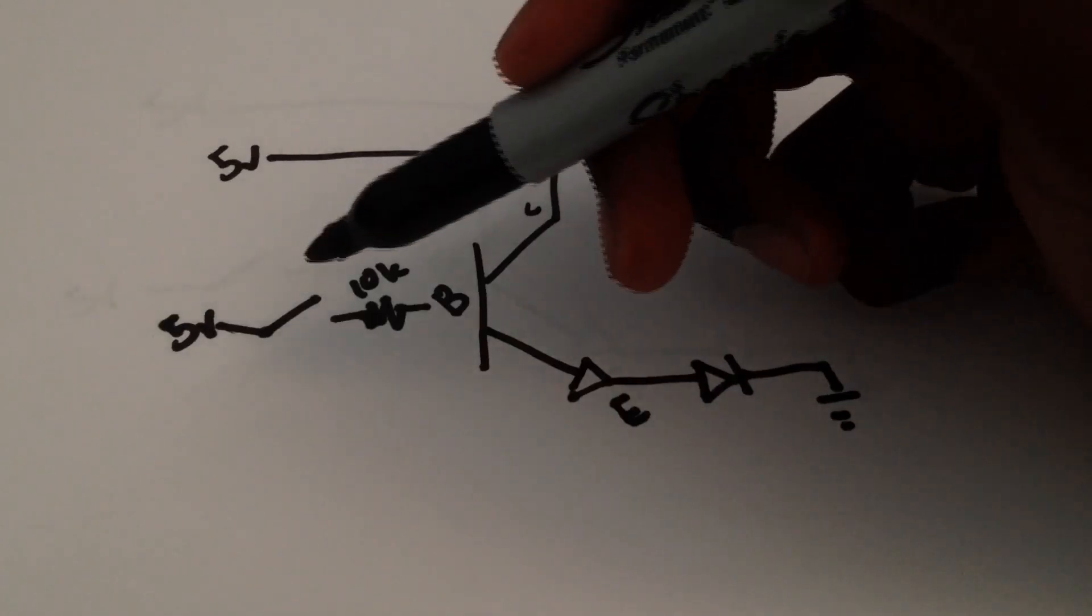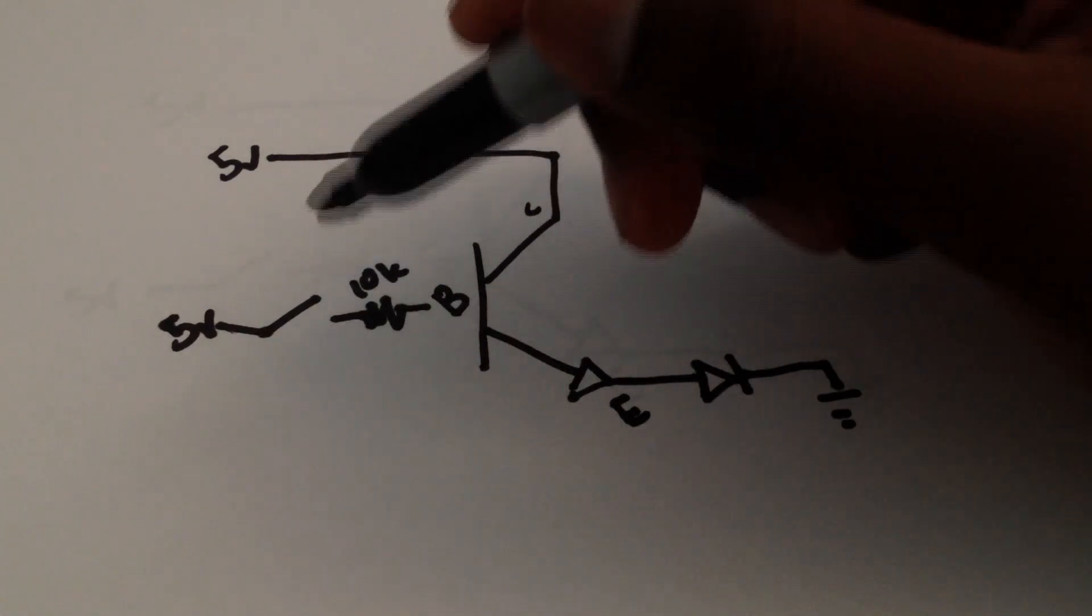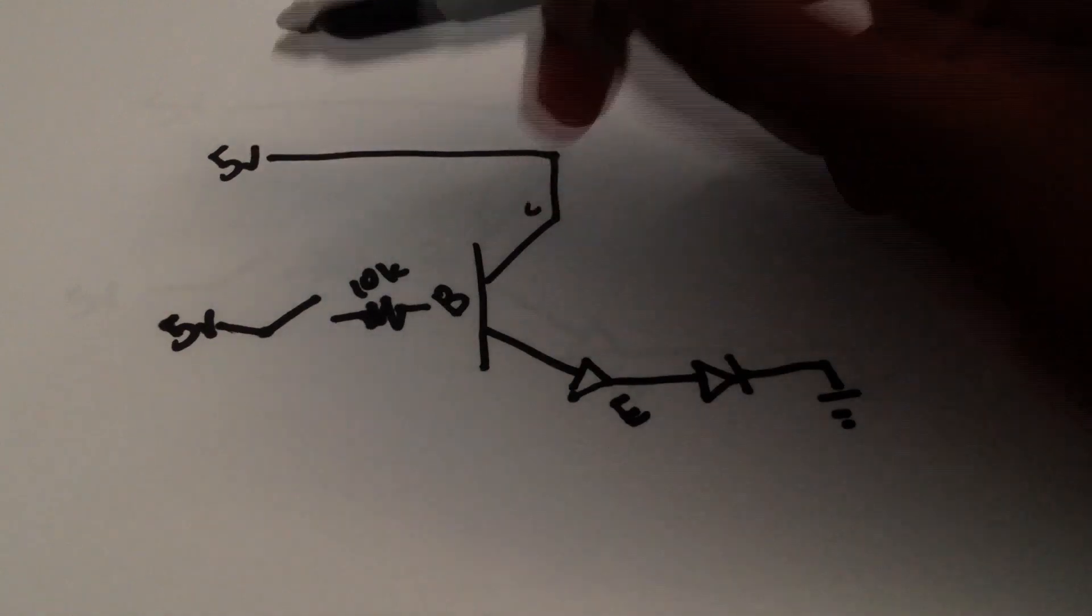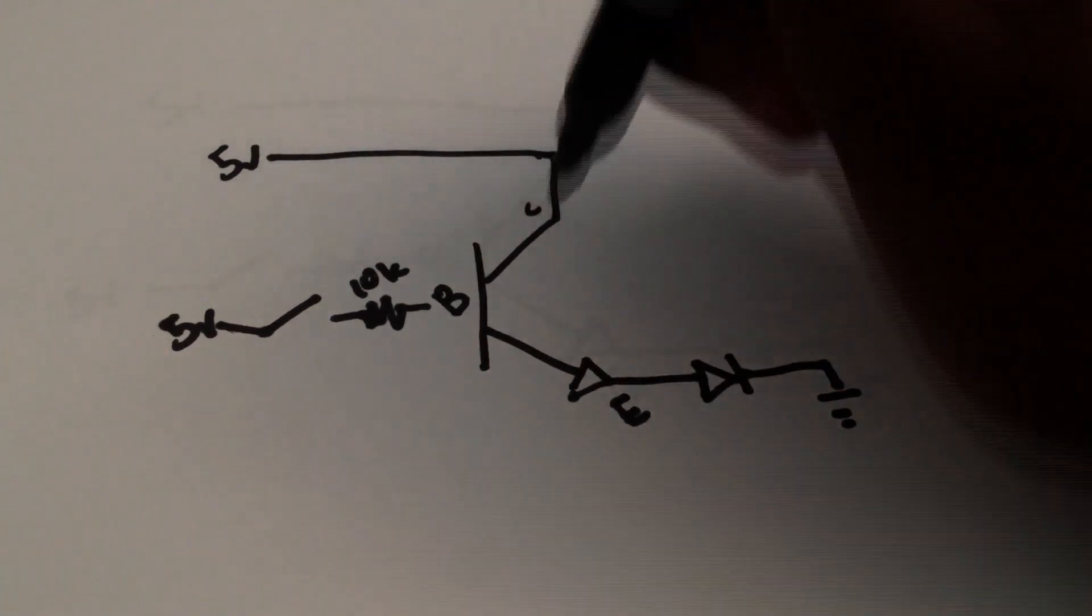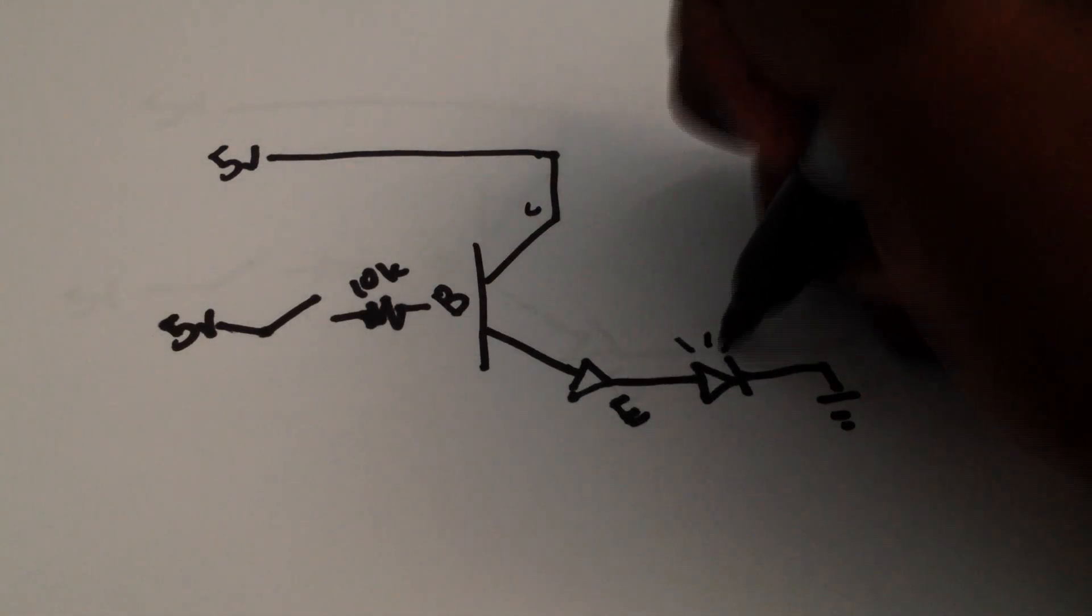And then the emitter goes to an LED out to ground. The reason we have this switch here is to control the voltage. So when we press the switch down, or we turn the circuit on, then voltage from the collector flows to the emitter, to the LED, turning it on,